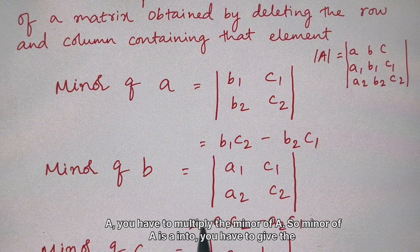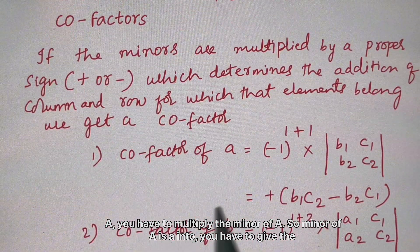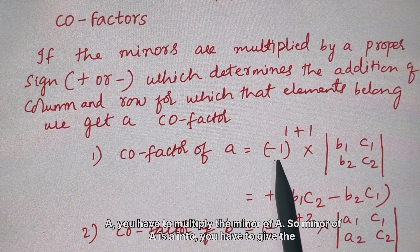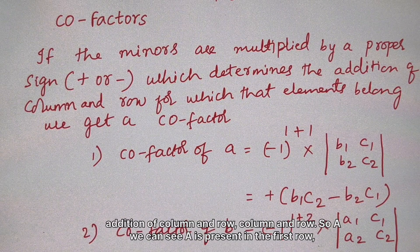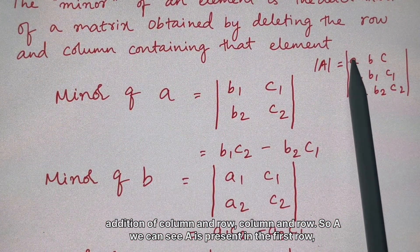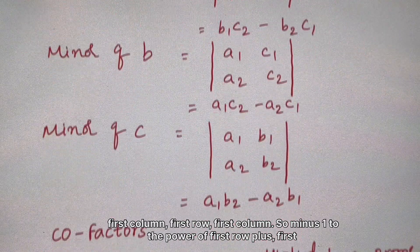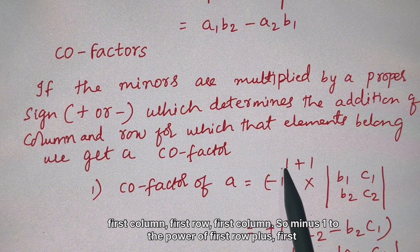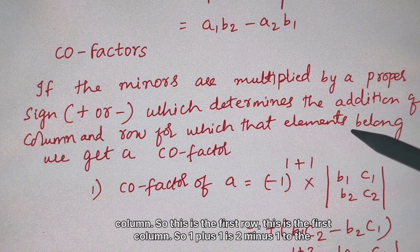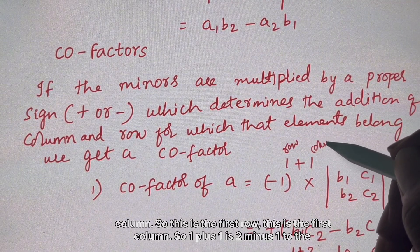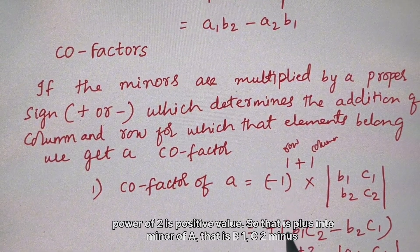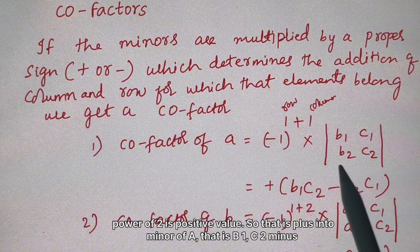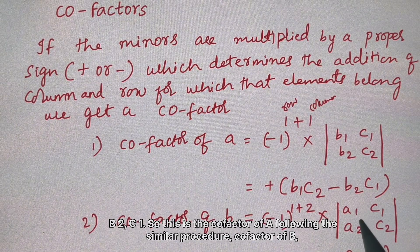For example, to calculate the cofactor of 'a': 'a' is in the first row and first column, so (-1)^(1+1) = (-1)^2, which is a positive value. So the cofactor of 'a' is plus one times the minor of 'a', giving b1·c2 minus b2·c1.